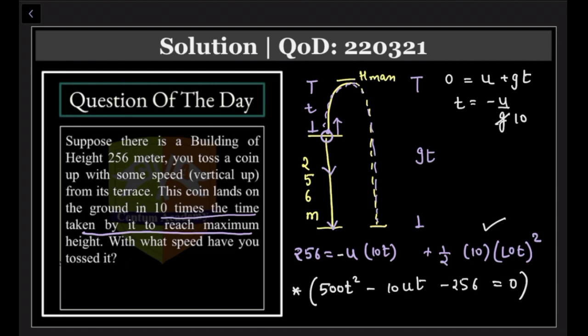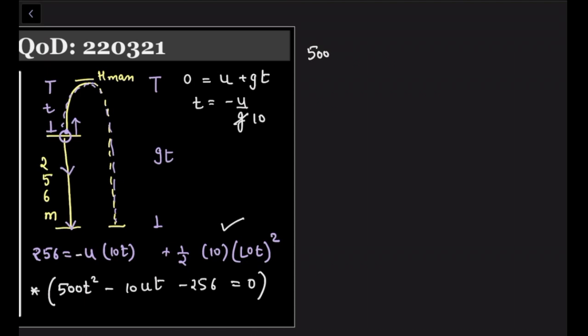If you do that, what you get is 500 into u square by 100. This g is also 10, minus will get cancelled. Minus 10 into u, instead of t again u by 10, minus 256 equals 0. This is 5u square minus u square minus u square, that is 4u square equals 256.